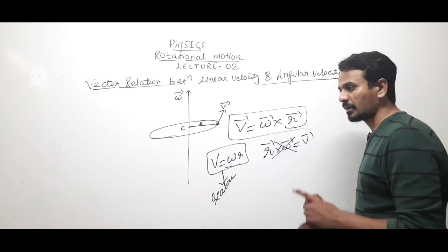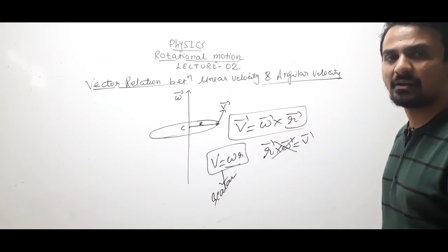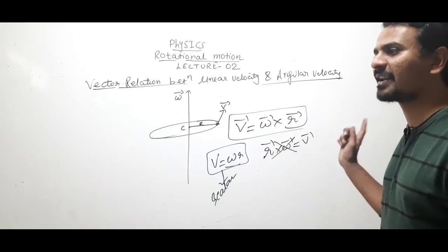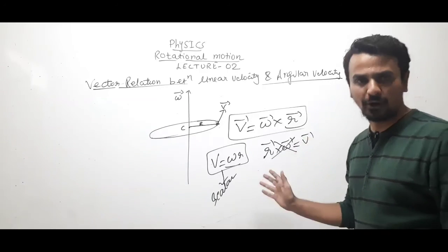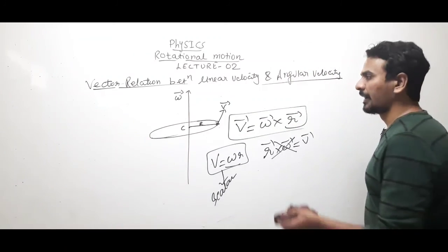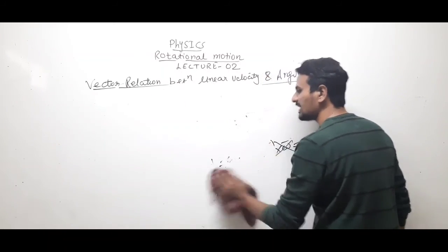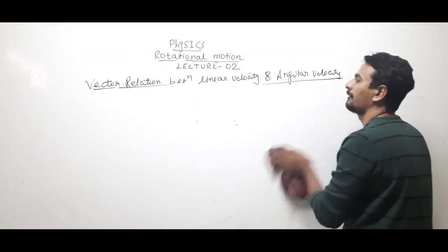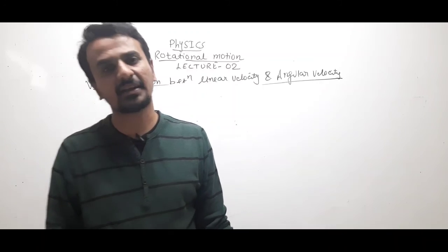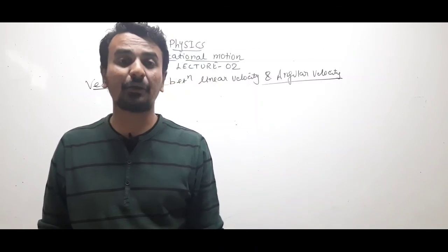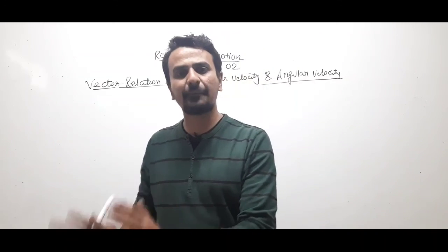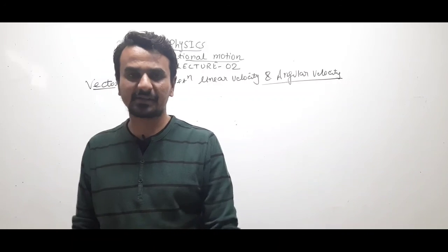To find the direction of angular velocity: place a screw parallel to the axis, rotate it in the direction of the body's rotation, and the advancement gives the direction of ω. In the next video, we will discuss average and instantaneous angular acceleration, the relation between linear and angular acceleration, and solve related problems.